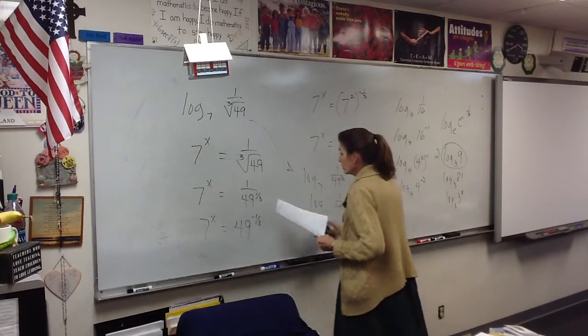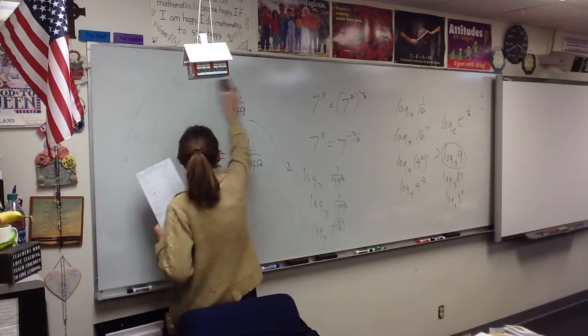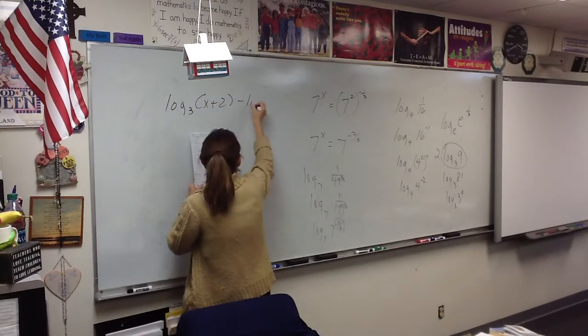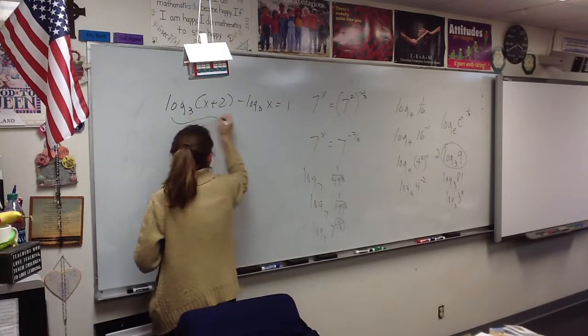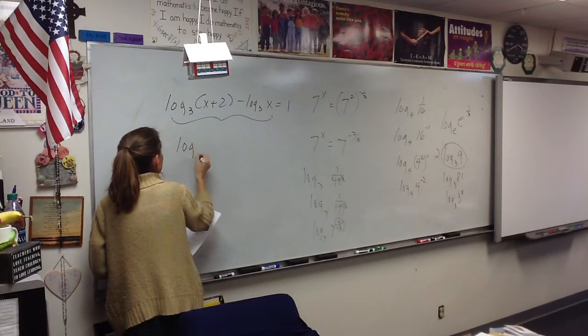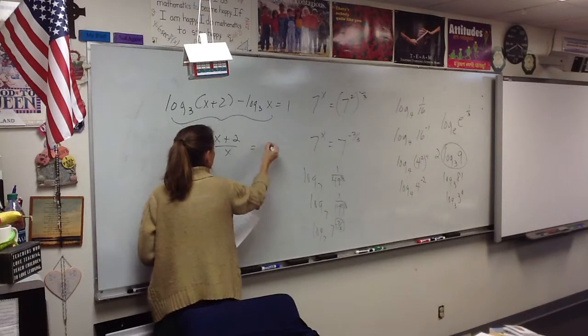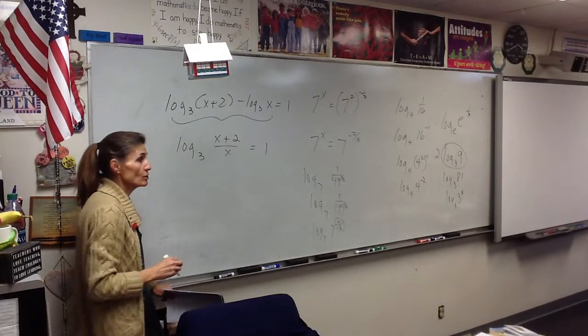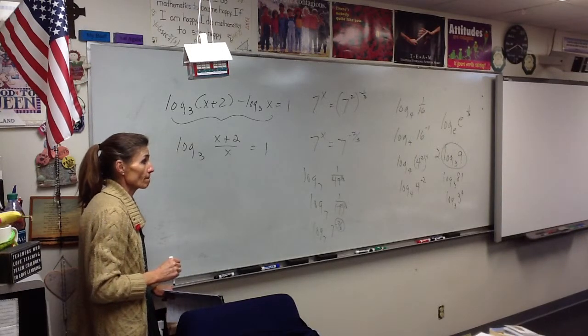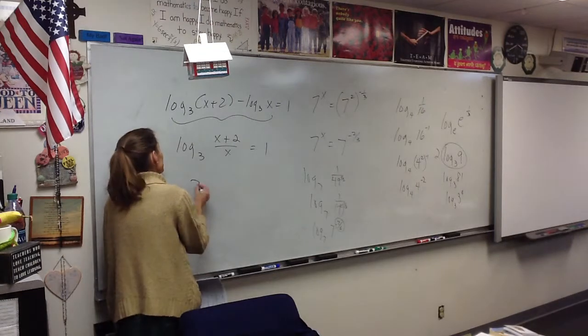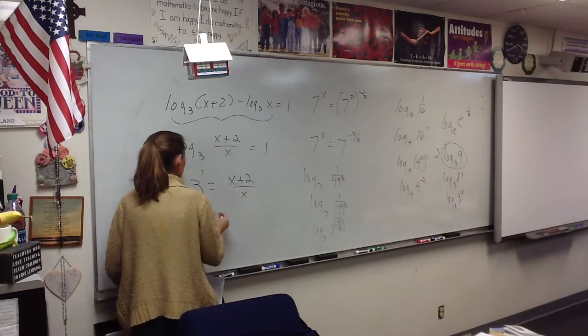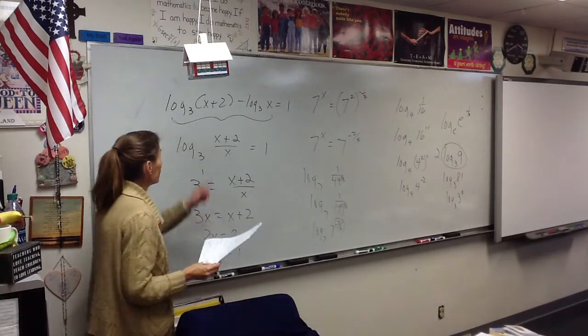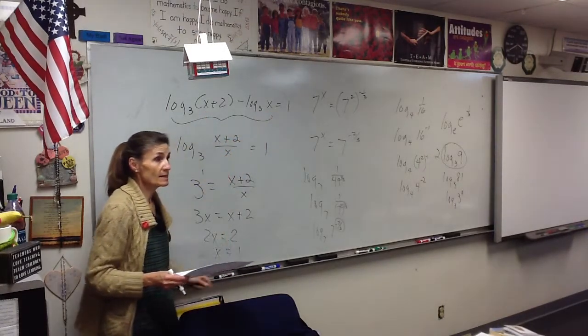This is one of our logarithmic equations. We cannot solve a logarithmic equation if there are two logarithms on one side. So the first thing we have to do is put these two together. That's a subtraction, so they will go together as a division. Now there's one logarithm, so what am I going to do? 3 to the 1 equals x plus 2 over x. So 3x equals x plus 2, 2x equals 2 and x equals 1. When I go back and put that into my problem, it doesn't make anything negative, so I'm good.